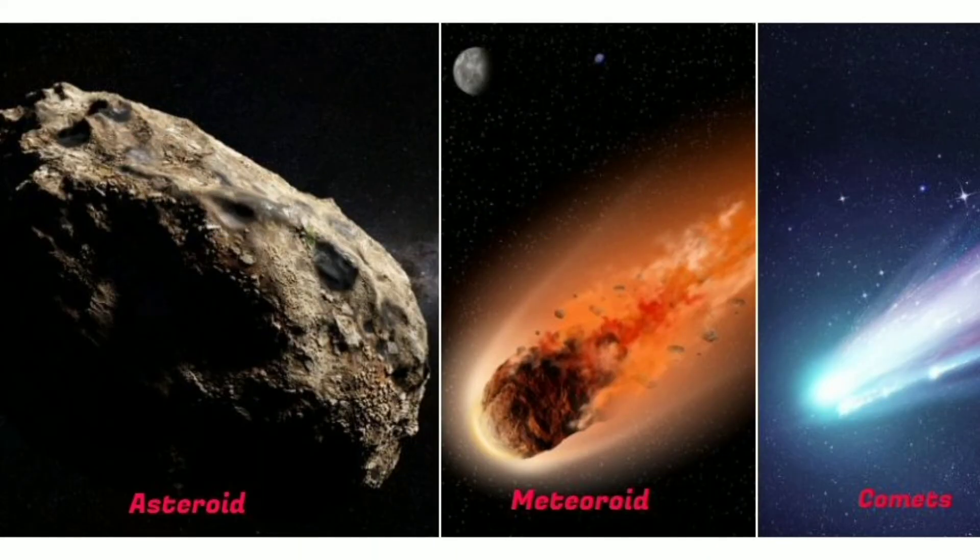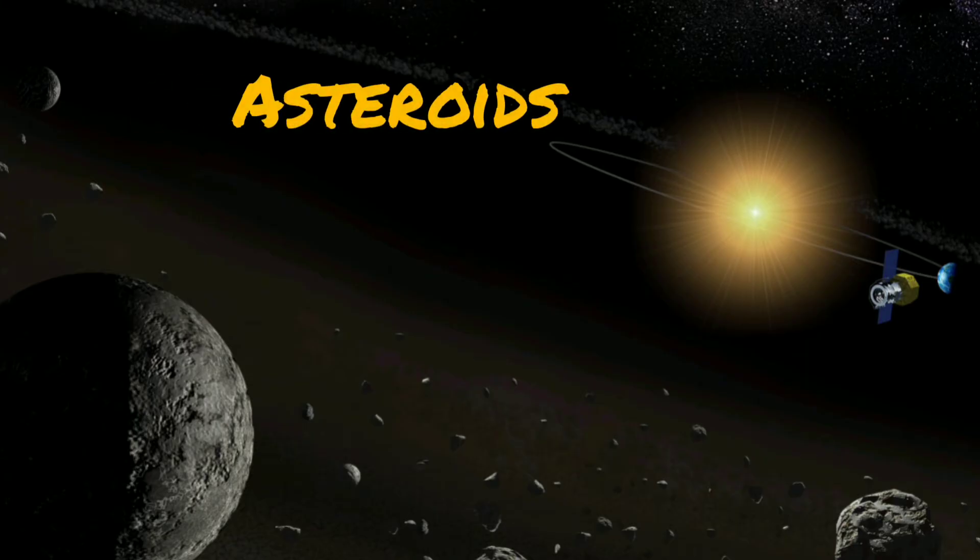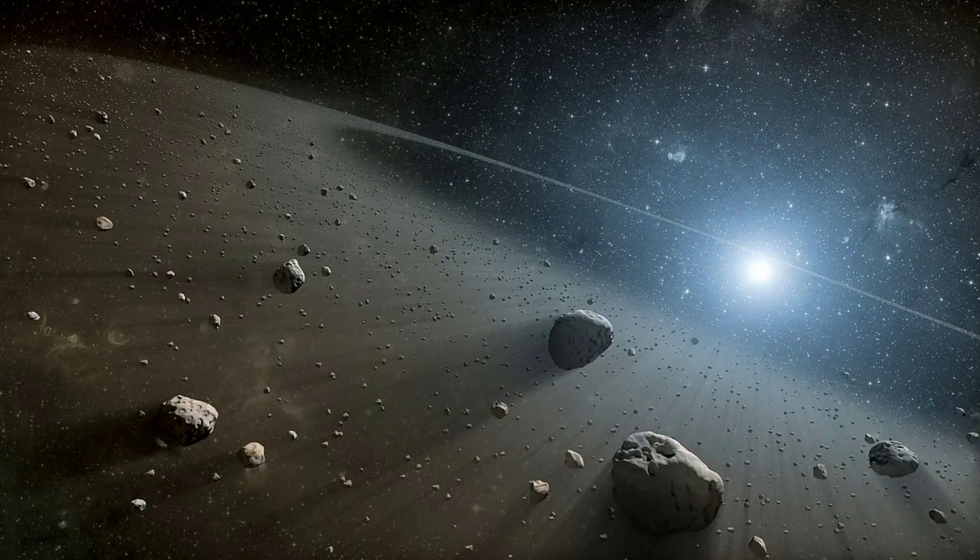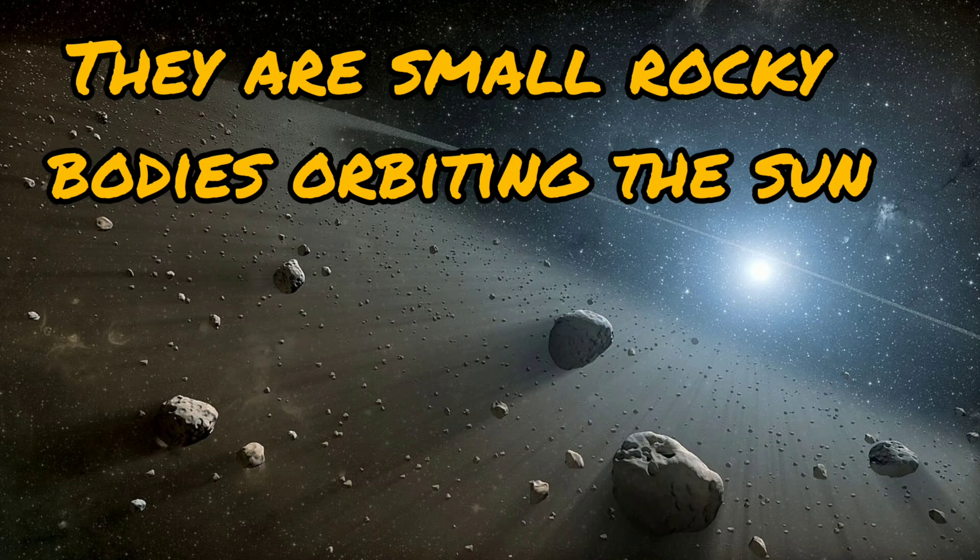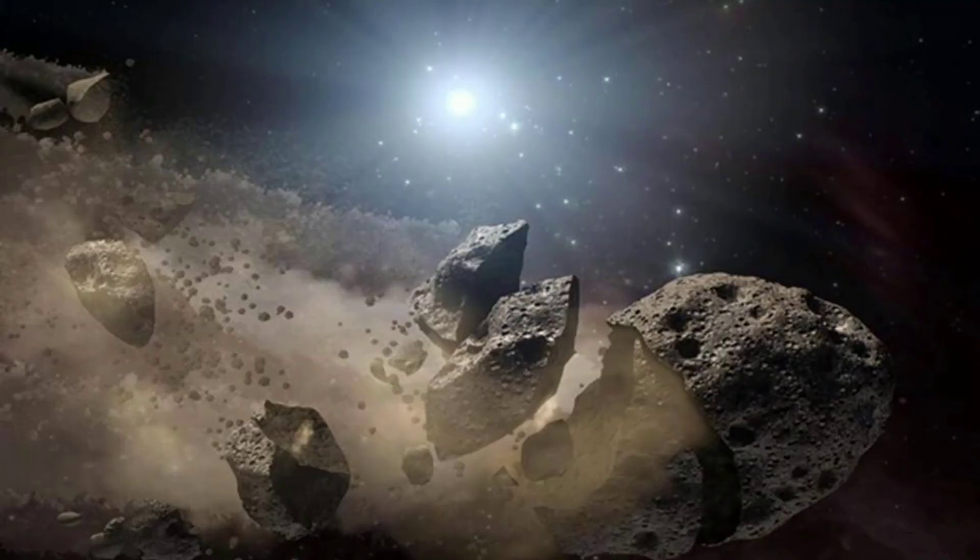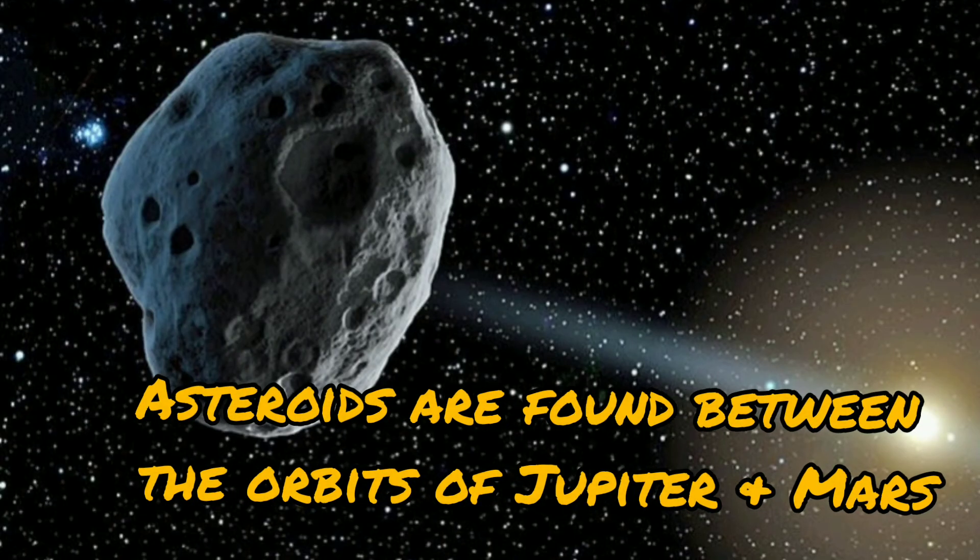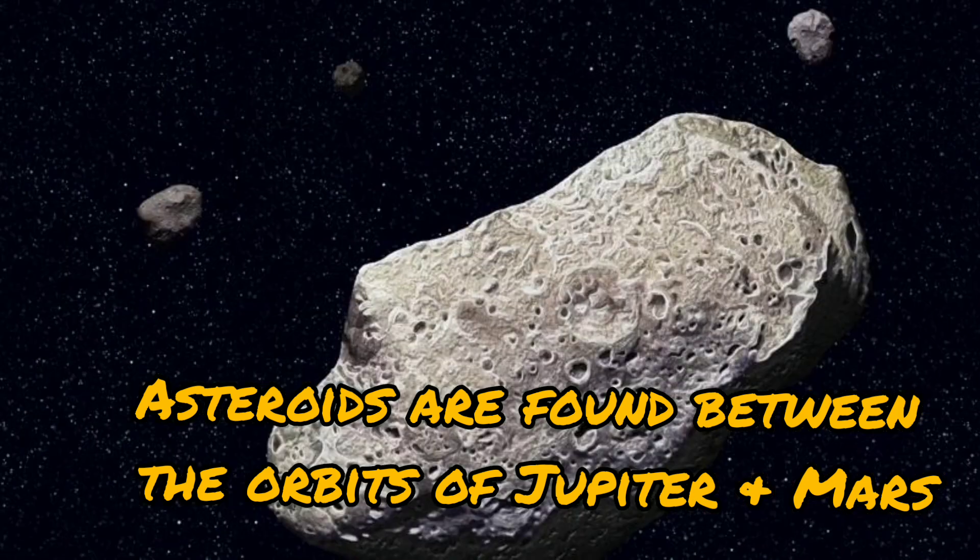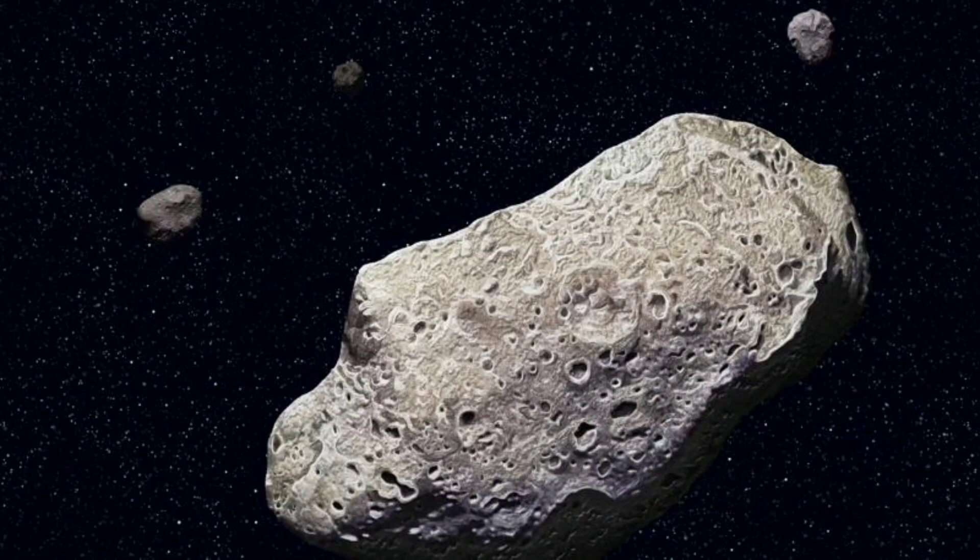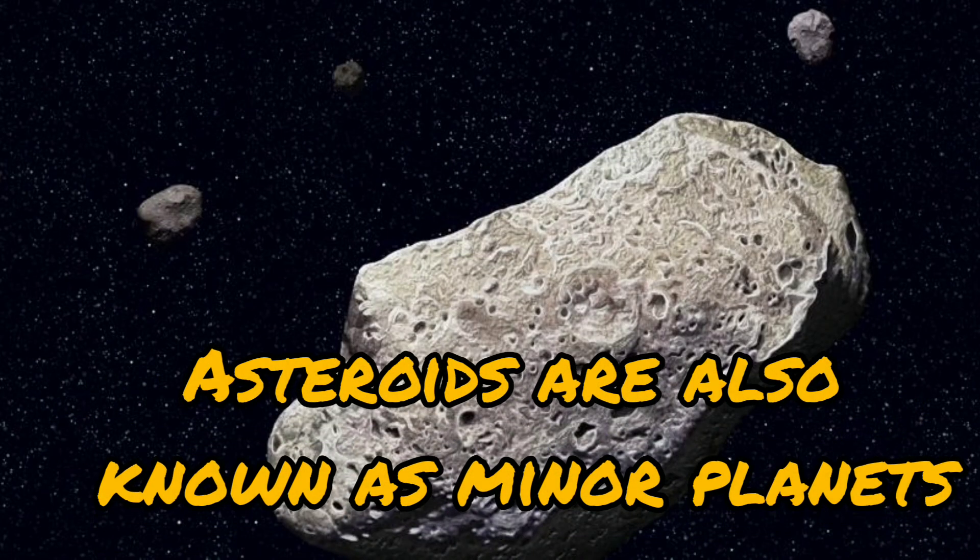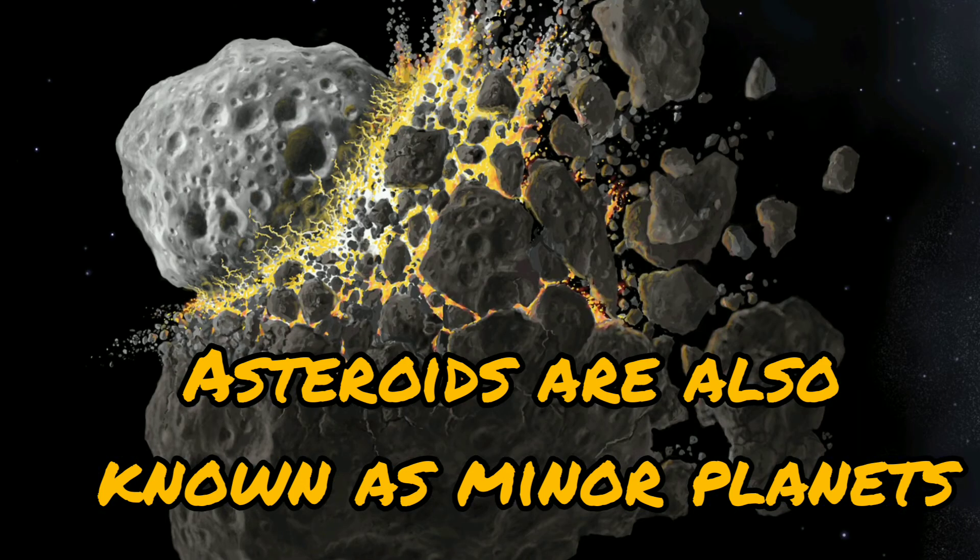The first one among them is asteroids. Asteroids are small rocky bodies orbiting the sun. They are present in large numbers. Asteroids are found between the orbits of Jupiter and Mars. They are also known as minor planets.